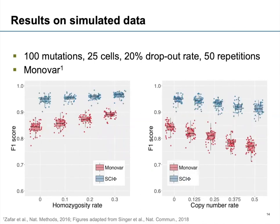We also looked at other measures. For example, we increased the homozygosity rate — the number of homozygous mutations — and we can see that both approaches improve. We also wanted to make sure that in cancer, where you typically have copy number changes, our model handles this reasonably. Our model doesn't explicitly account for copy number changes, but with an increasing amount of copy number changes, performance decreases only moderately — not as bad as one could have expected.